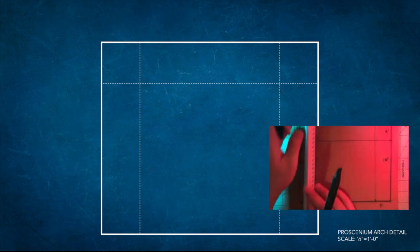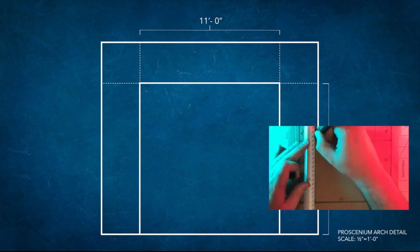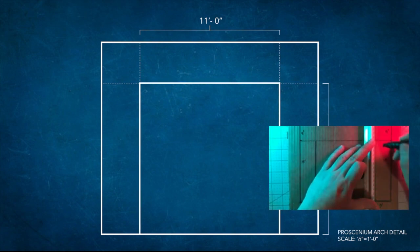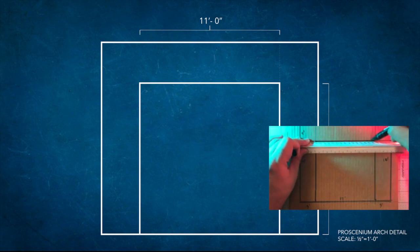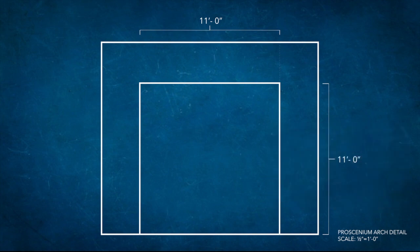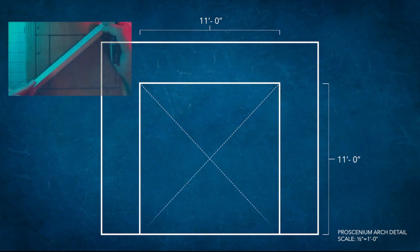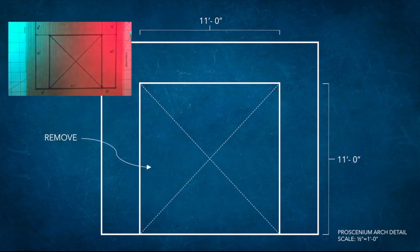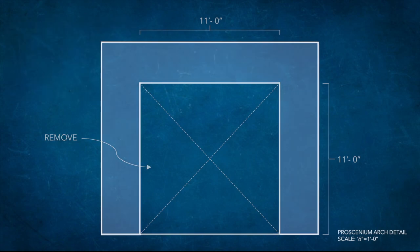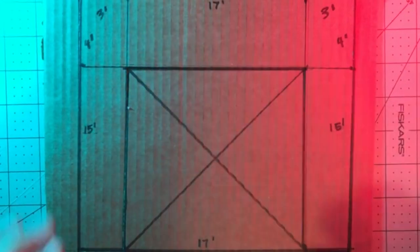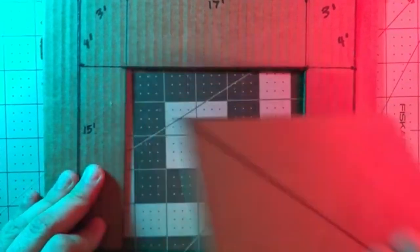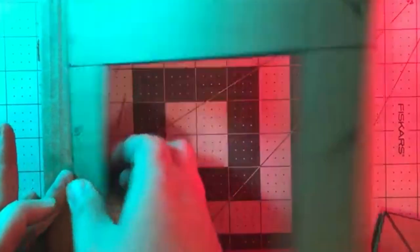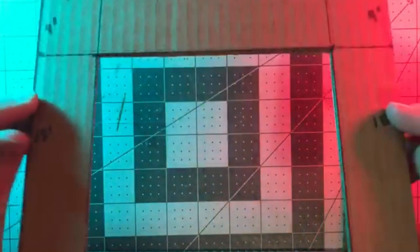Next delineate the 11 foot by 11 foot squared opening by thickening the line weight around the square. Mark out an X within the boundaries of the box. This indicates negative space or a section that should be removed. Next cut out the opening and larger square with your scissors and remove the excess cardboard. Here you have your scale proscenium arch.